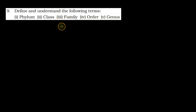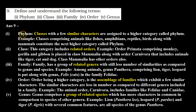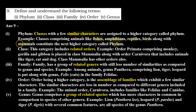Let's check the answer. First, phylum. Phylum is a group of similar classes — it is one category in which we have similar characters. For example, we have different classes like fishes, amphibians, reptiles, birds, and mammals.